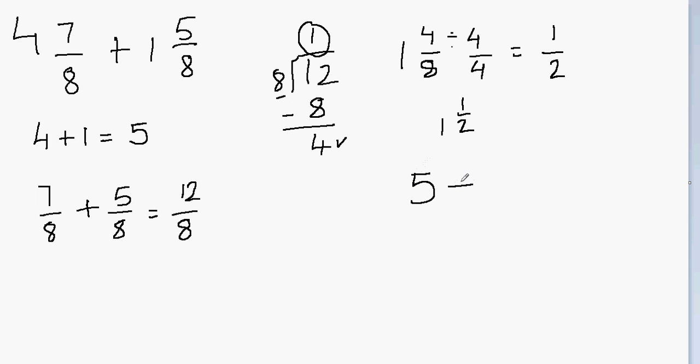So I have 5 for the whole part. And then I have to add 1 1/2 to this. So again, I have the whole part and the fractional part. So I will add the whole part first. 5 plus 1 will give me 6. And for the fractional part, I only have 1/2.